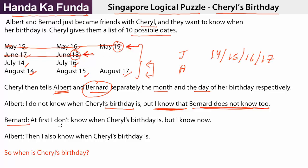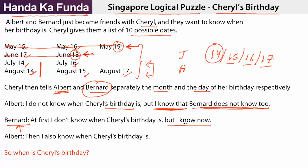Moving on to statement number 2 by Bernard: at first I don't know when Cheryl's birthday is, but now I know. So now he is sure. How can he be sure? He also now knows it has to be July or August. So if the birthday was July 14 or August 14 — if the date Bernard heard was 14 — he couldn't have figured out the birthday because it could be either. That means the date Bernard heard is not 14. That means he heard either 15, 16, or 17. If he heard 15, the answer is August 15. If he heard 16, the answer is July 16. If he heard 17, the answer is August 17. He knows for a fact what the answer is, meaning the date he heard was not 14.